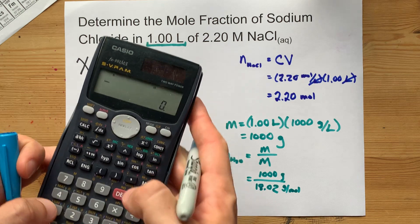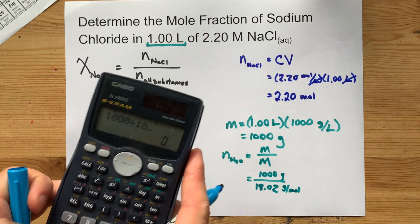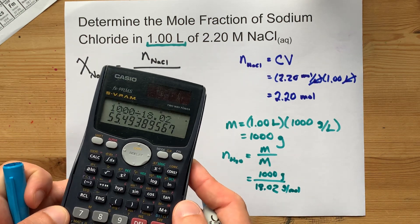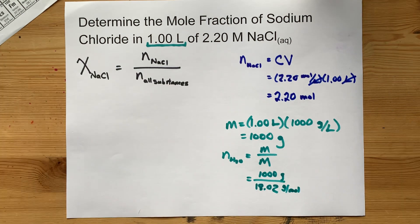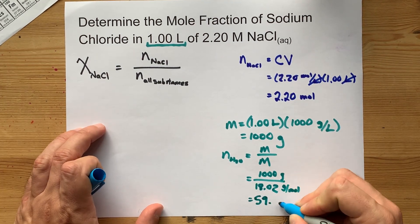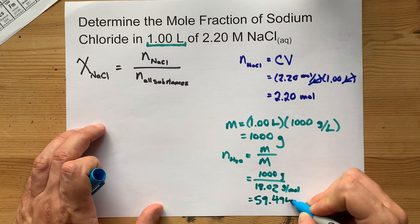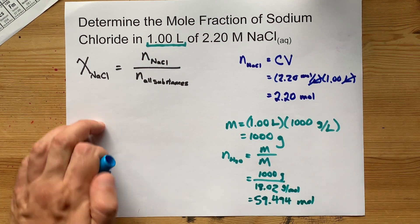What is that? 1,000 divided by 18.02. 55.494 moles. 55.494 moles of water entirely.